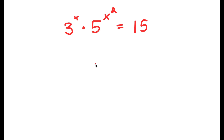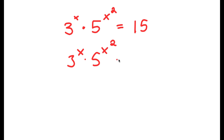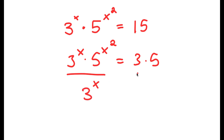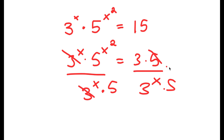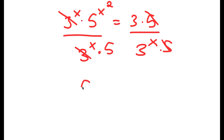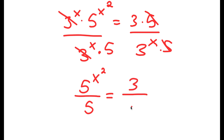In this problem, I have 3 to the power of x times 5 to the power of x squared equals 15. To solve this, I'll start by rewriting 15 as 3 times 5. So now I have 3 to the power of x times 5 to the power of x squared equals 3 times 5. I'm going to divide both sides by 3 to the power of x as well as 5, so the 3 to the power of x terms cancel on the left, and the 5's cancel on the right. This gives 5 to the power of x squared over 5 equals 3 over 3 to the power of x.